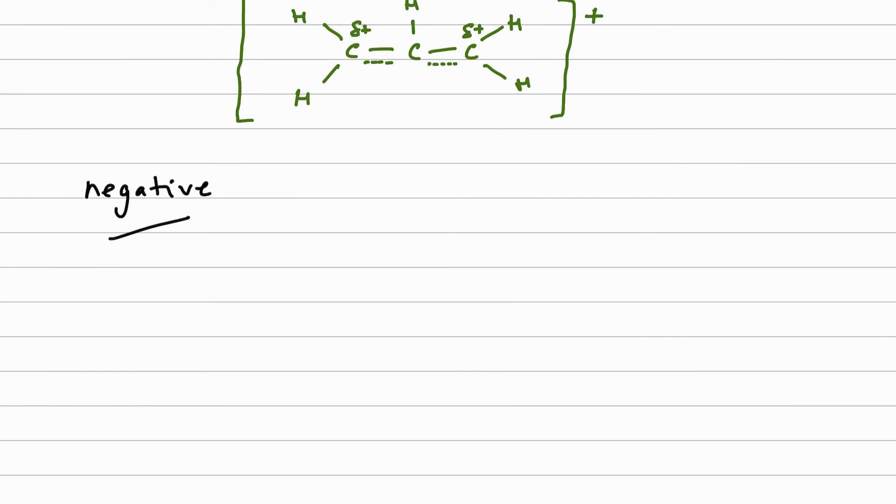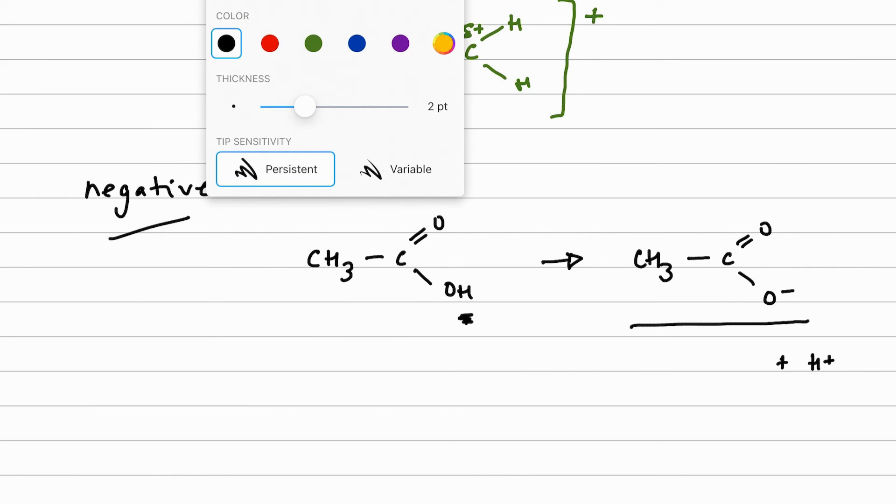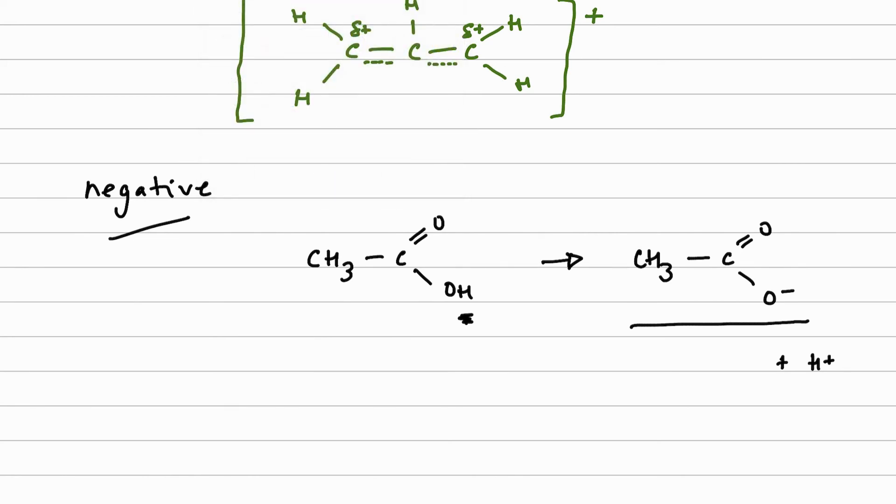So let's have a look at a negative mesomeric effect. So this is where we are stabilizing an ion by moving charge away. Bear that in mind. I'm going to go back to our carboxylic acid. This is something we should be familiar with now. Carboxylic acids are acidic because they have the ability to donate a proton - that is our basic definition of an acid. And when that happens, we end up with our carboxylate ion and obviously our proton. Now this carboxylate ion is able to stabilize itself through a negative mesomeric effect.